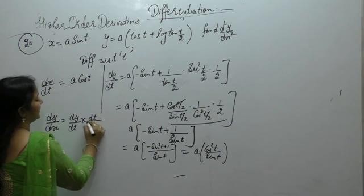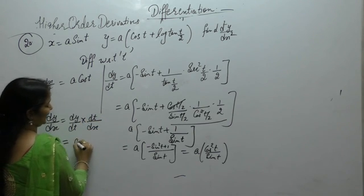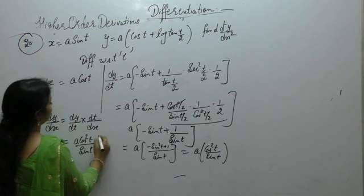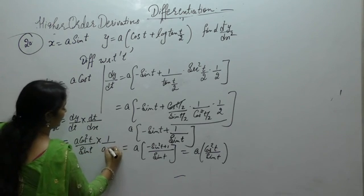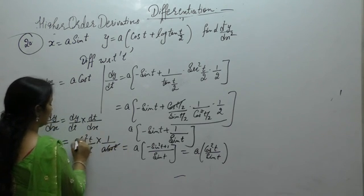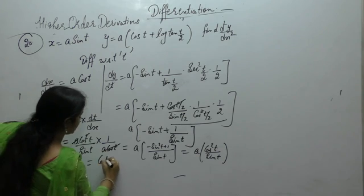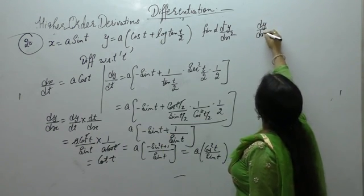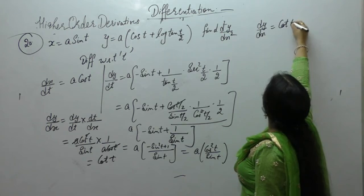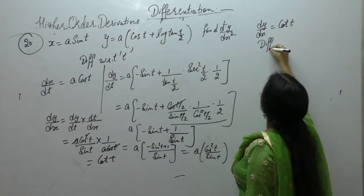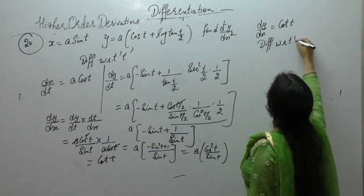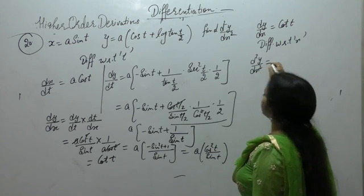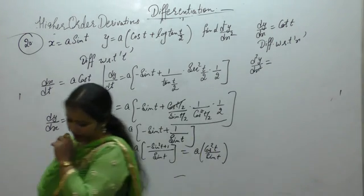Now dy/dx equals (dy/dt) times (dt/dx). We have a cos²t upon sin t times 1 upon a cos t, giving cos t upon sin t, which is cot t. So dy/dx equals cot t.